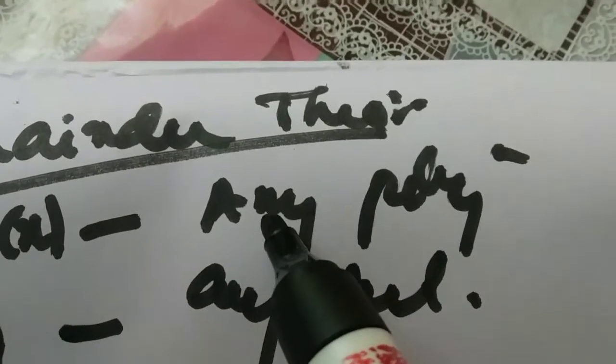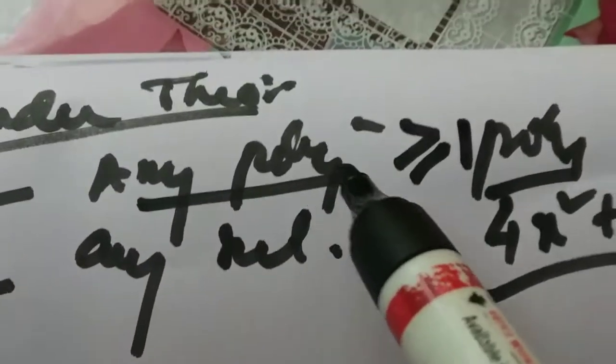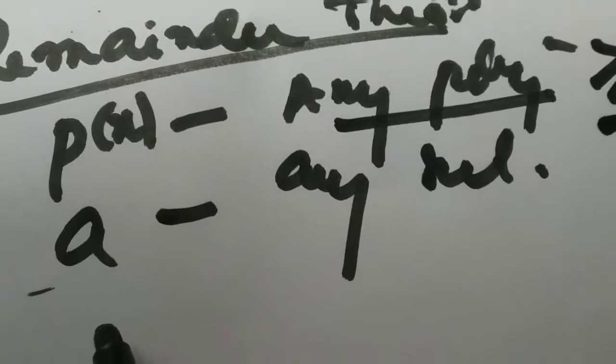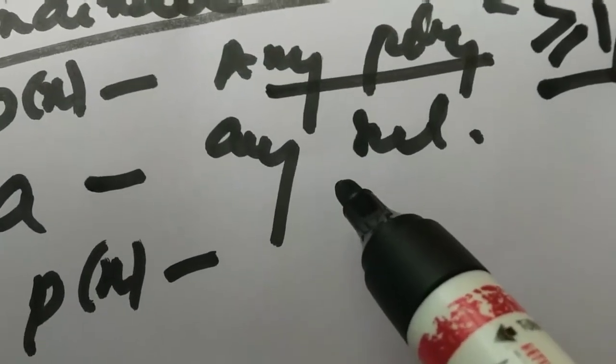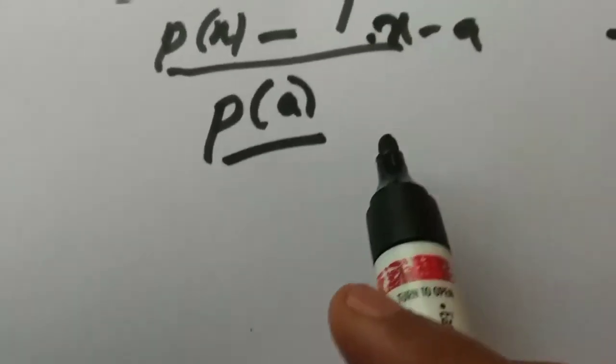The theorem states that if P of X is any polynomial of degree greater than or equal to one, and 'a' is any real number, and P of X is divided by a linear polynomial — linear means degree one, that is X minus a — then the remainder will be P of a.